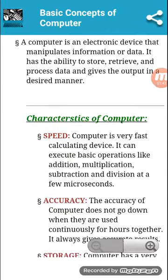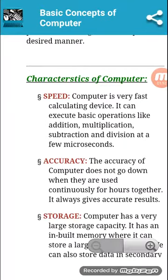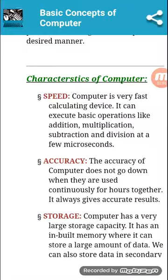What are the characteristics of a computer? Characteristics means nature or features. The first feature is speed. A computer is a very fast calculating device. It can execute basic operations like addition, multiplication, subtraction, and division in a few microseconds.